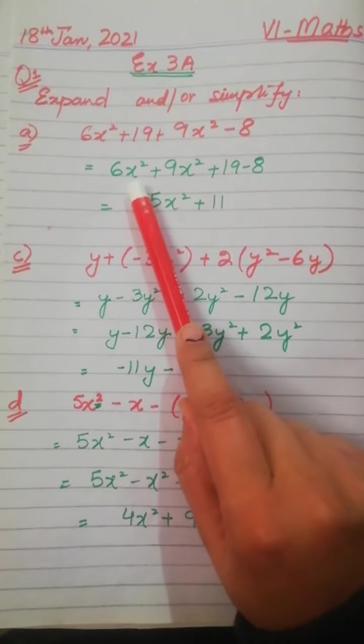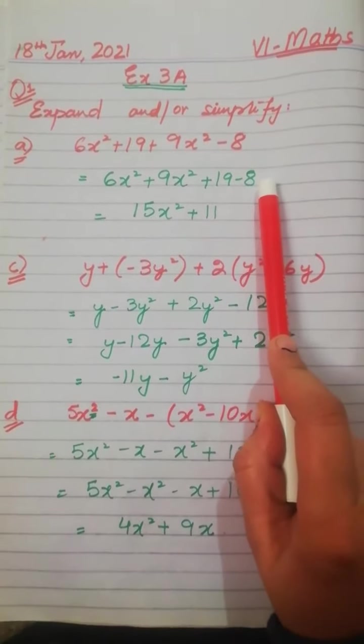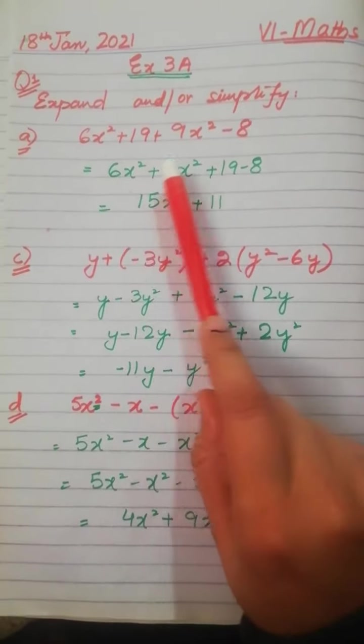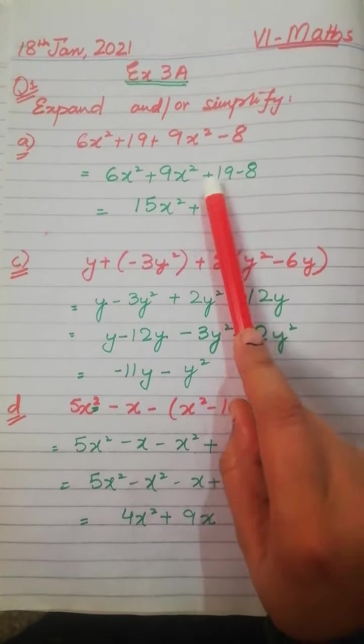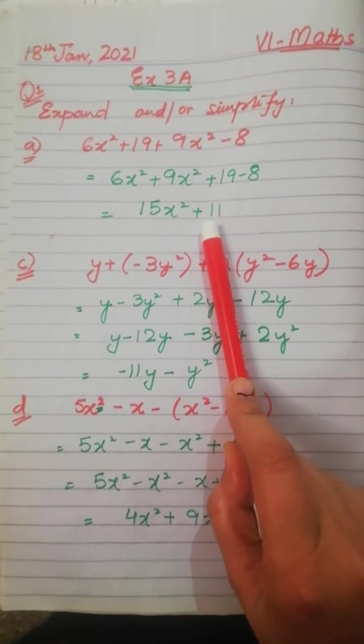In this step, I have made the terms of x² and x² and constants together. 6x² plus 9x² add होंगे 15x² plus, and 19 और 8 को minus करेंगे तो हमारे पास आजाएगा 11.